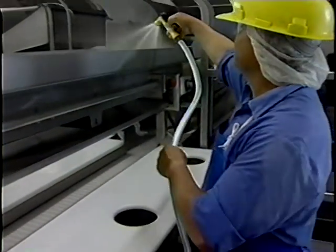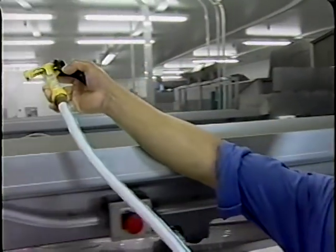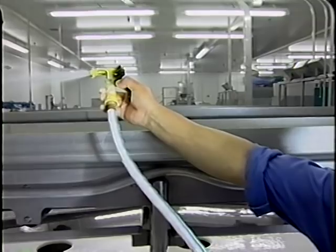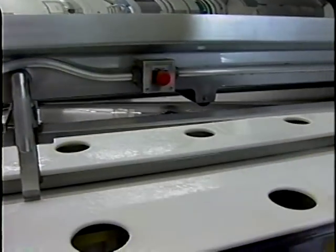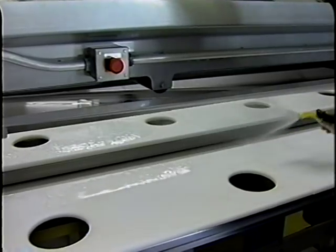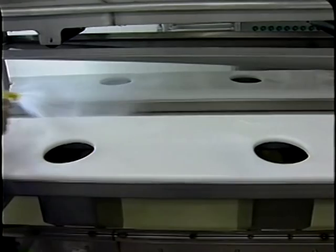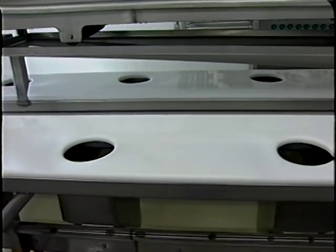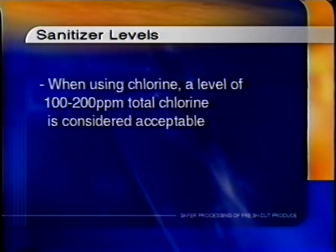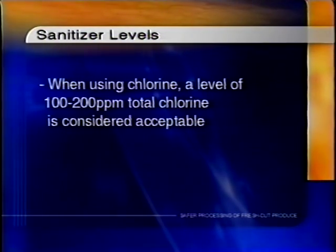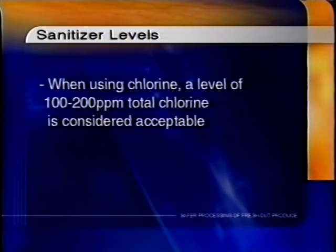Next, all surfaces should be sanitized with an approved antimicrobial agent. Commonly used sanitizers include chlorine, chlorine dioxide, or quaternary ammonium. It's important that the level of sanitizer used be adequate to kill the targeted microbe, which could be Salmonella, Listeria monocytogenes, or E. coli O157:H7, or any other pathogen. When using chlorine, a level of 100 to a maximum of 200 parts per million total chlorine is typically used.